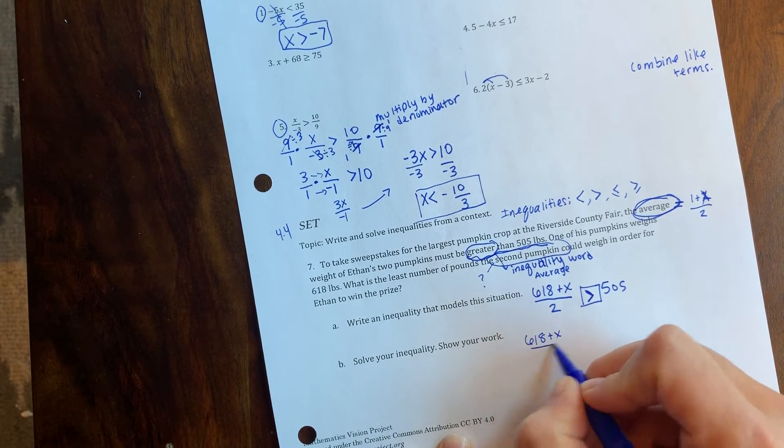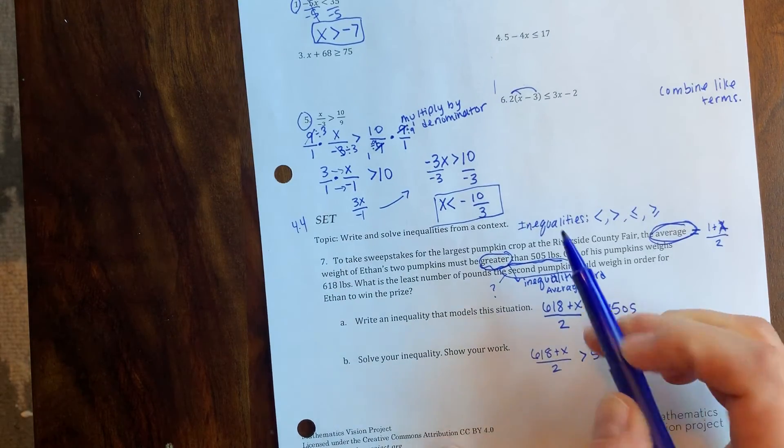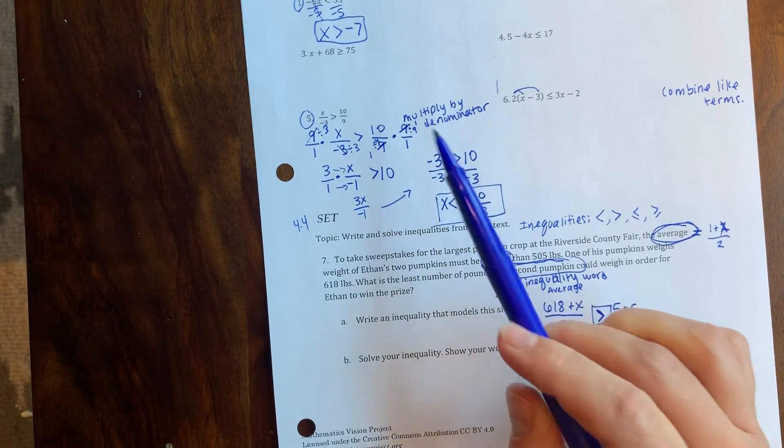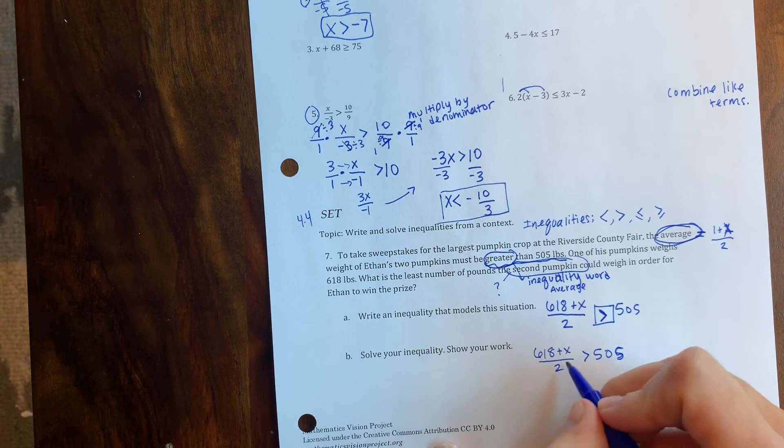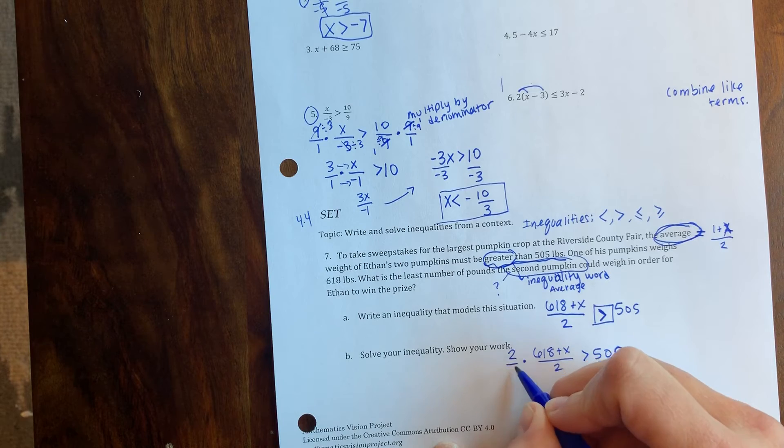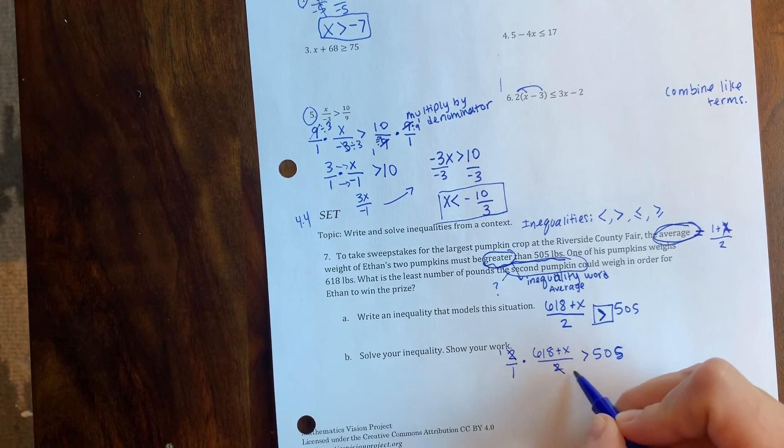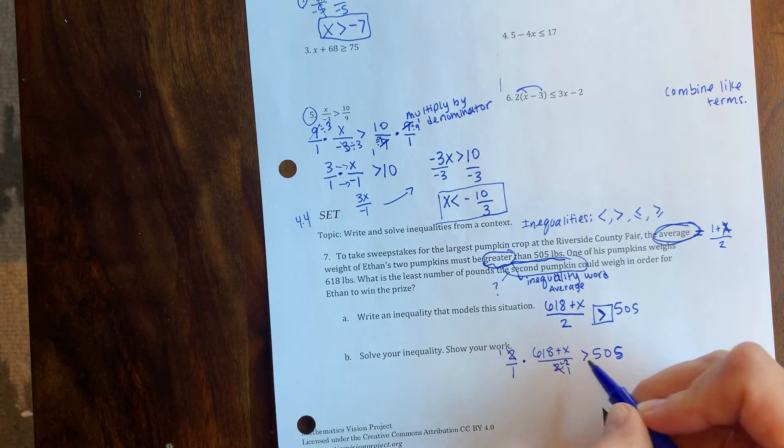I'm just going to rewrite it so I have some room and we're going to go back to what we did in the first section. We need to multiply by the denominator. That's how you get rid of a fraction. I like to write it as two over one so I can see the cross canceling. Those both divide by two.